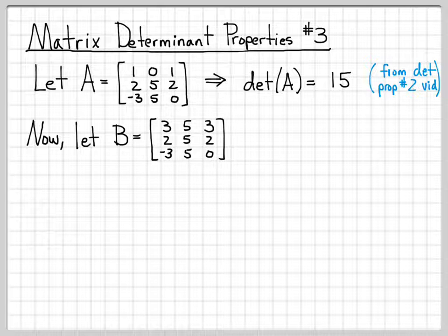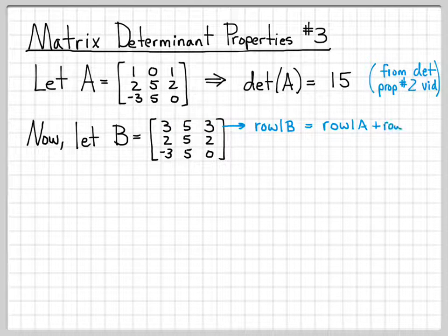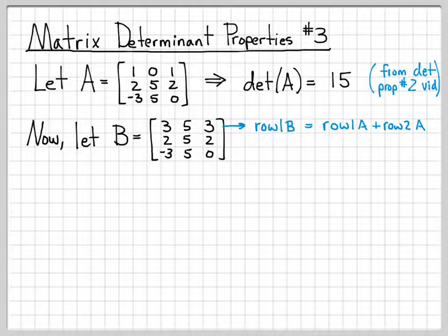The only thing that has changed from matrix A to matrix B is the first row. And actually, what you can see is that this row right here is actually a combination of rows from matrix A. This first row of B is actually equal to the first row of A plus the second row of A, right?